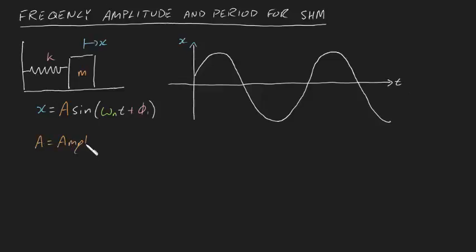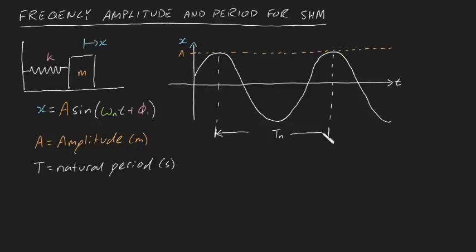This sine wave can be described by its amplitude, which is the maximum displacement of the block from equilibrium in meters. Its natural period, which is the time taken for the block to complete a full cycle, in seconds,